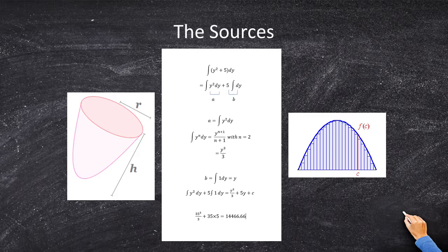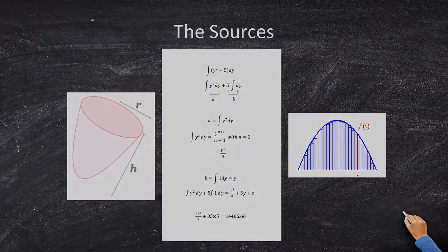Next, just plug in 35 for y, and that's it. So 35 cubed over 3 plus 35 times 5 equals 14,466.6.